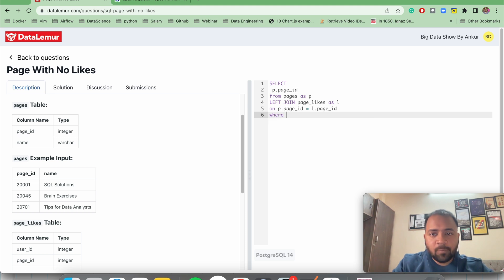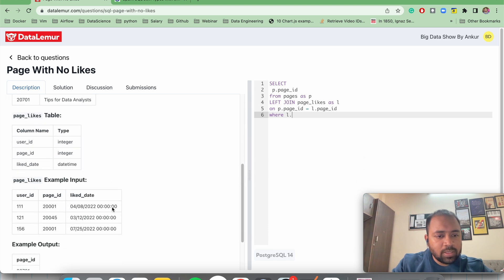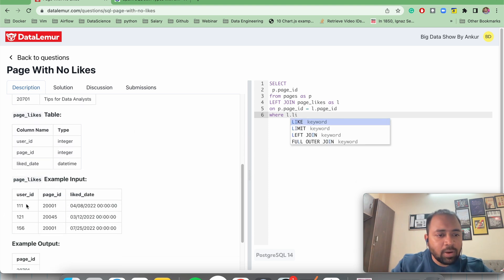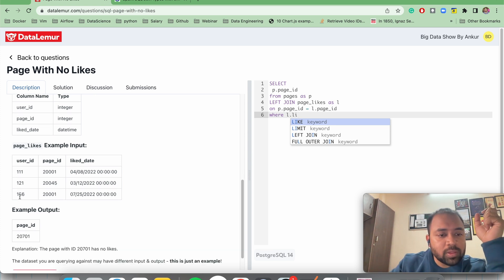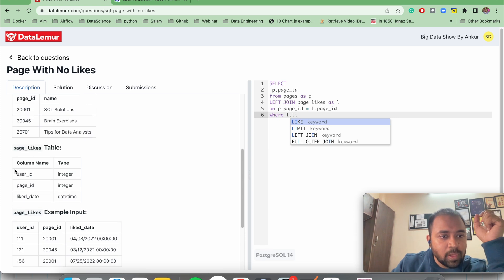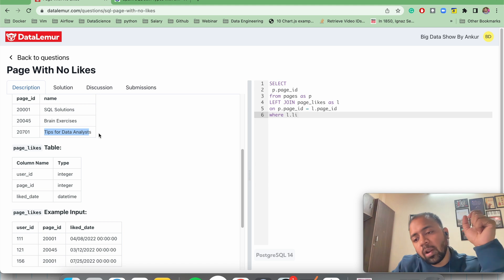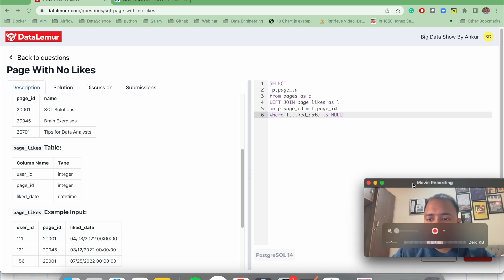Now we have to write WHERE l.—what is it? like_date. We can take any column because we have applied the left join. So for this particular case, this 20701, this particular row will come after the left join and all other columns will be null. So we can apply l.like_date IS NULL. We could have also written l.user_id IS NULL. So let us just run it.